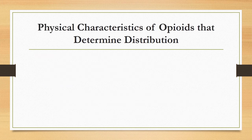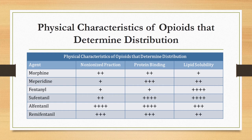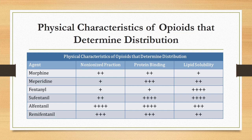Here is a chart providing a visual representation of the physical characteristics of opioids that determine distribution in the body. You can see that although meperidine and fentanyl both have a low non-ionized fraction, fentanyl's low protein binding and high lipid solubility make it more easily distributed and give it a larger volume of distribution.